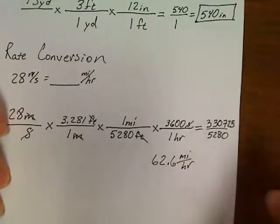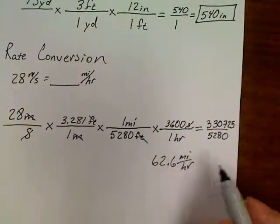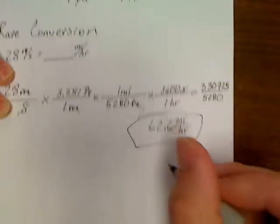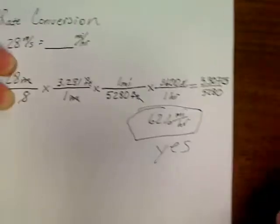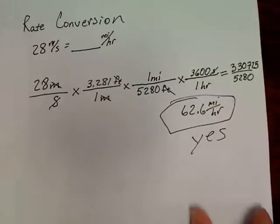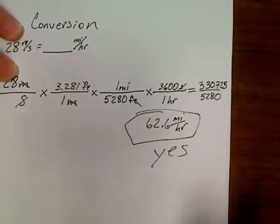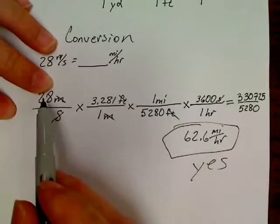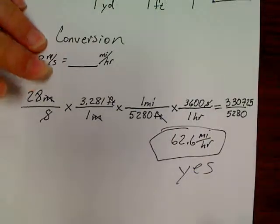So the question was: were you exceeding a 55 mile per hour speed limit? The answer is yes, you are. The most typical thing for you in physics would be to start with miles per hour and convert backwards to meters per second.